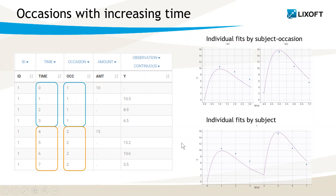In this second example, the same occasions are now recorded with increasing time, with occasion 2 following occasion 1, and with no overlap between the periods. There is no reset of the dynamical system between each occasion, so in Monolix, occasion 2 will depend on occasion 1. When the individual fits are displayed with subject occasions on the same plot, they will appear in the same color because they correspond to only one prediction.